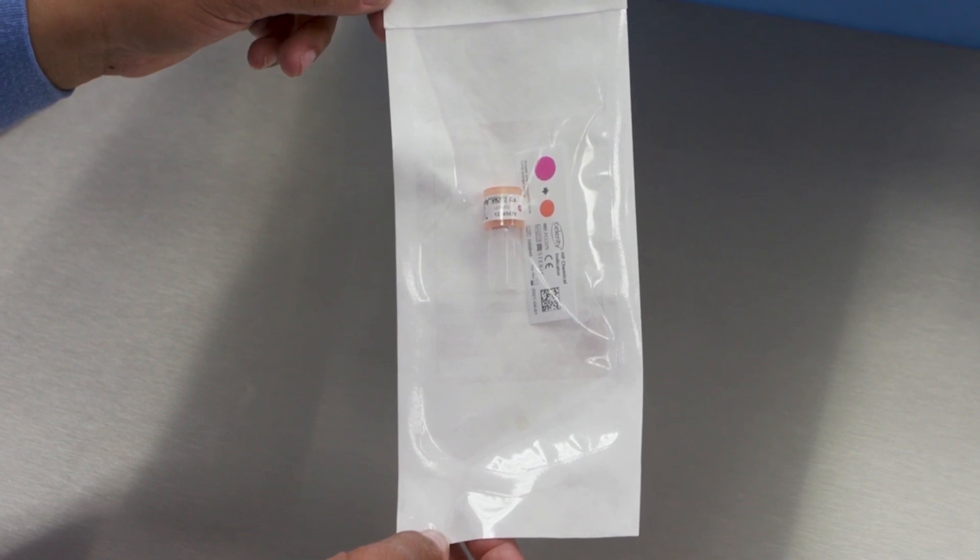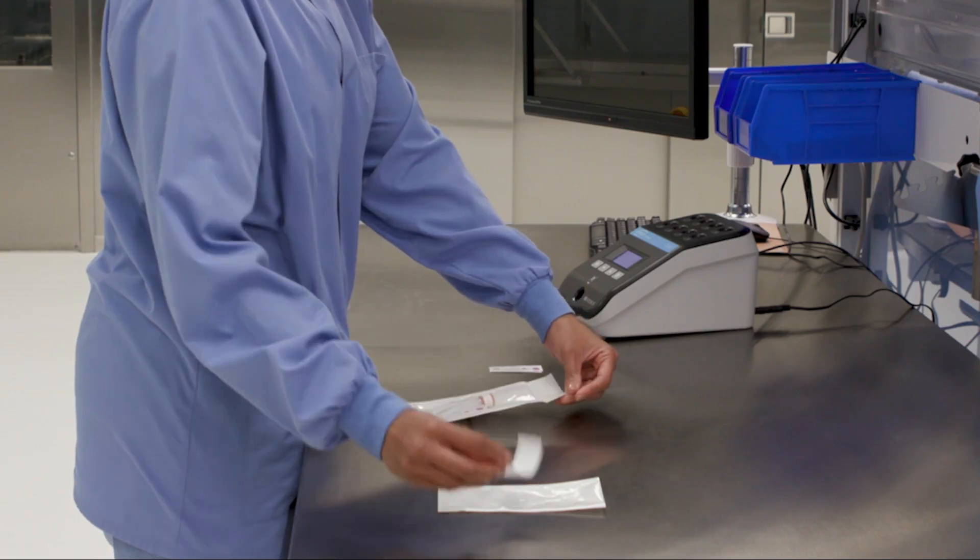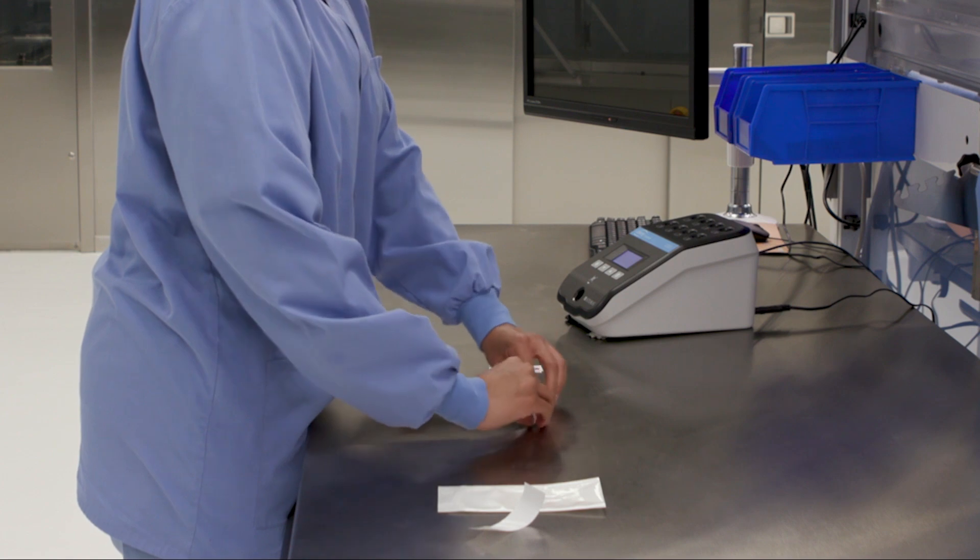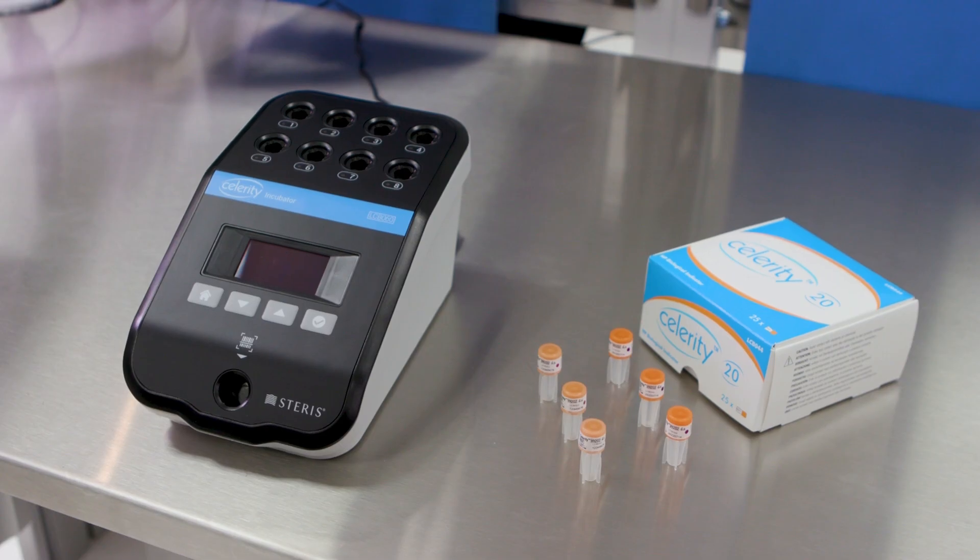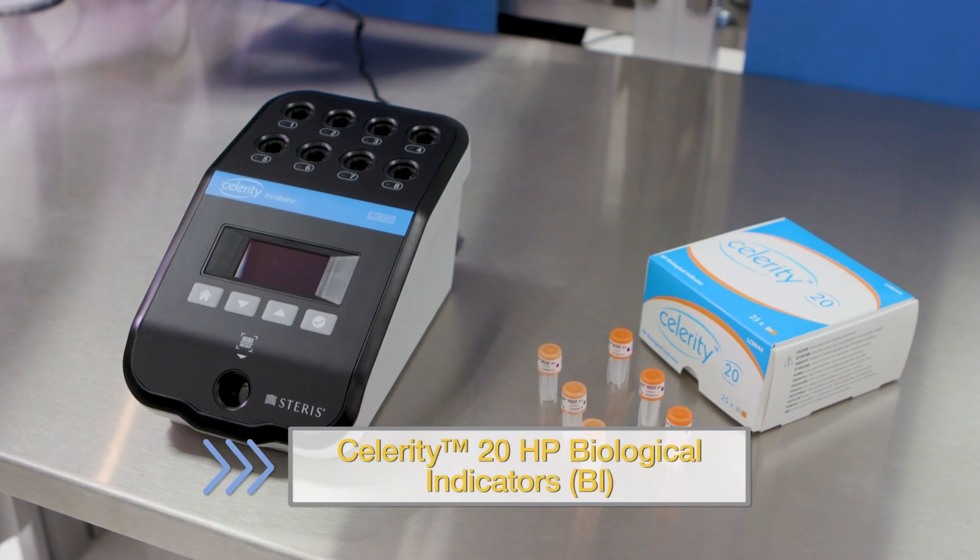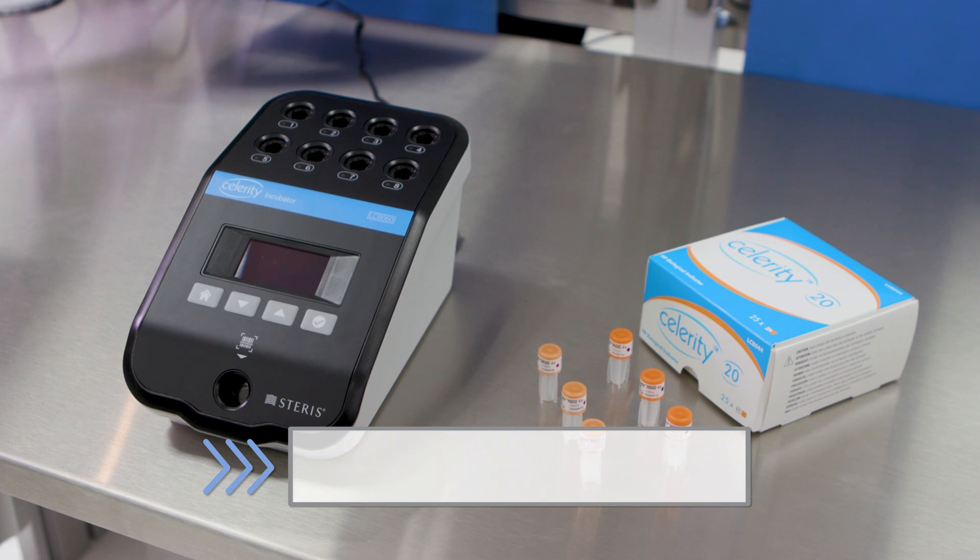The Celerity HP BIs are used for monitoring VPRO low-temperature sterilizers and STERAD systems. Materials needed include Celerity 20 HP biological indicator or Celerity 5 HP biological indicator to perform the test.